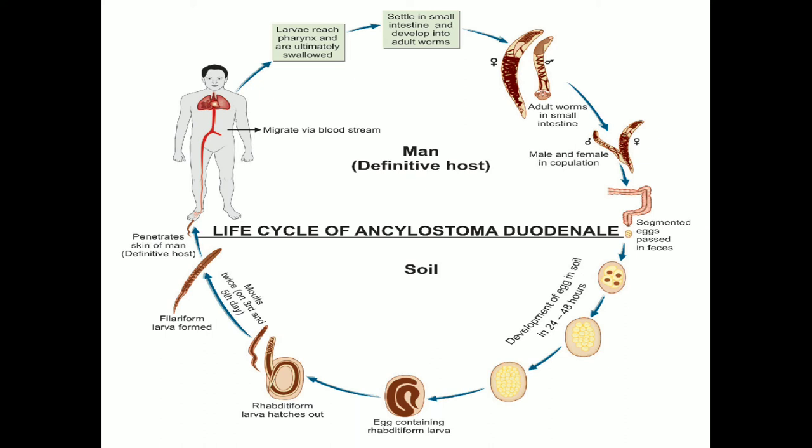The larva molts twice on the third and fifth days after hatching to become the third-stage infective filariform larva, which is about 500 to 600 micrometers long with a sharp pointed tail. The filariform larvae are non-feeding and can live in the soil for around five to six weeks, with their heads waving in the air waiting for a host. They can also ascend on blades of grass or other vegetation carried in capillary water. Direct sunlight, drying, or salt water can kill these larvae.